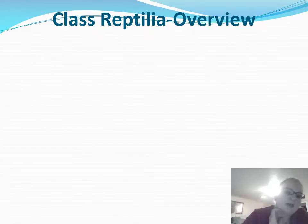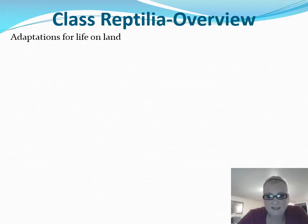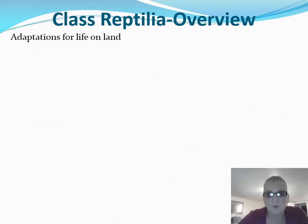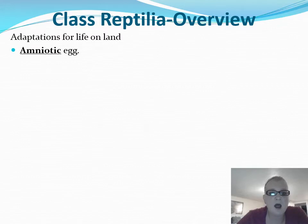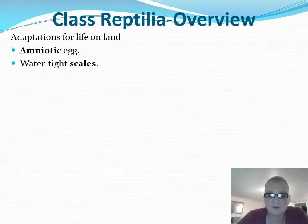Let's give an overview of reptile characteristics. They are well adapted to live on land — a big evolutionary shift is less reliance on water. Fish relied on water for oxygen; amphibians relied on water for reproduction and gas exchange through moist skin. Some key evolutionary changes: they have an amniotic egg able to hold in moisture for the developing embryo, so they no longer need water for reproduction. They also have scales that make their skin watertight so they don't have to worry about drying out.